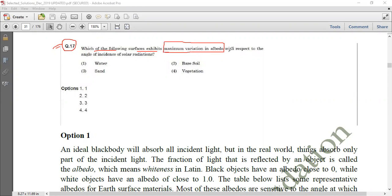Albedo is basically reflectance with respect to the angle of incident of solar radiation. At what angle the solar radiation incident, depending upon that, which one among the given quantities show the maximum amount of variation in the albedo?